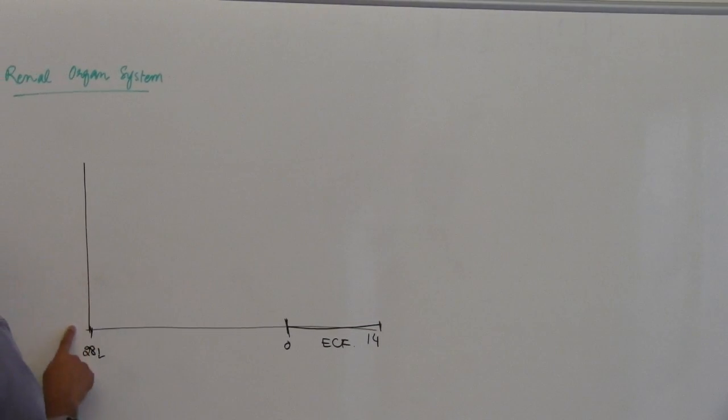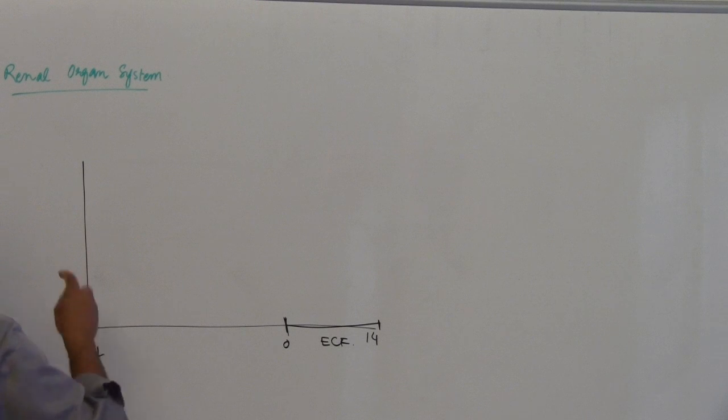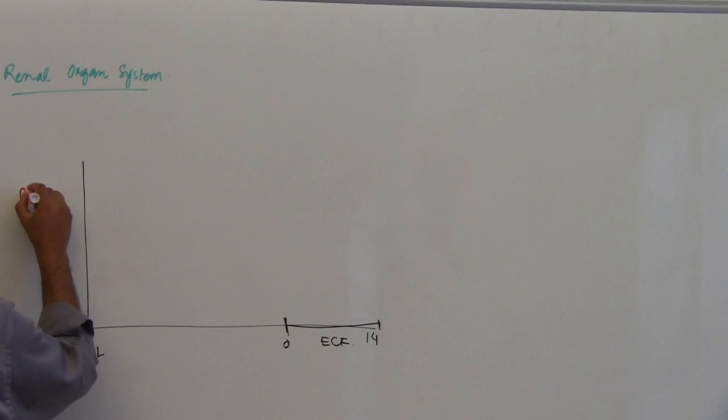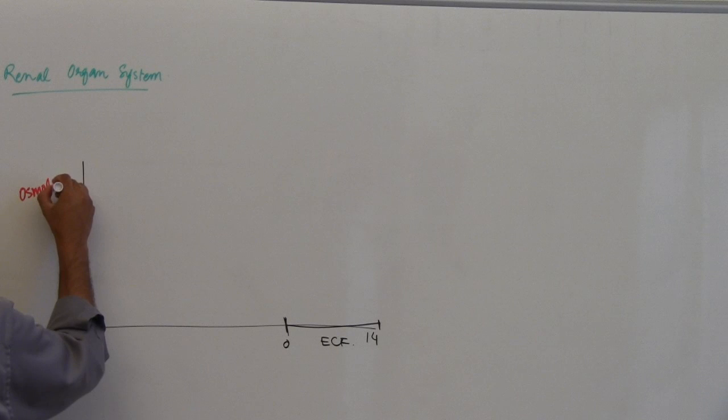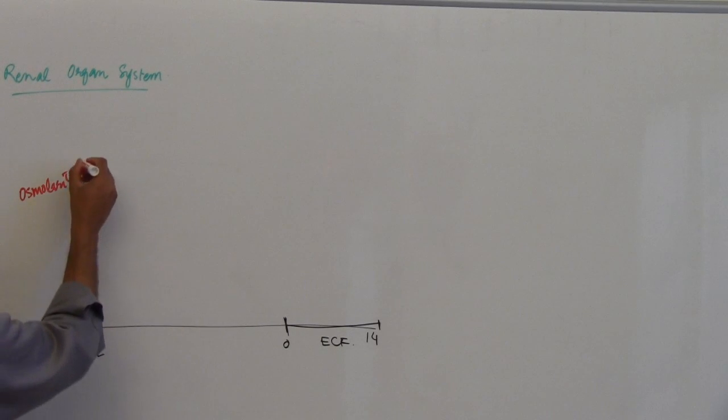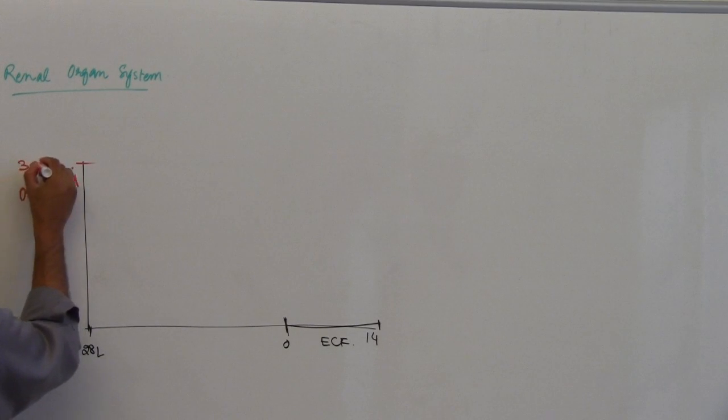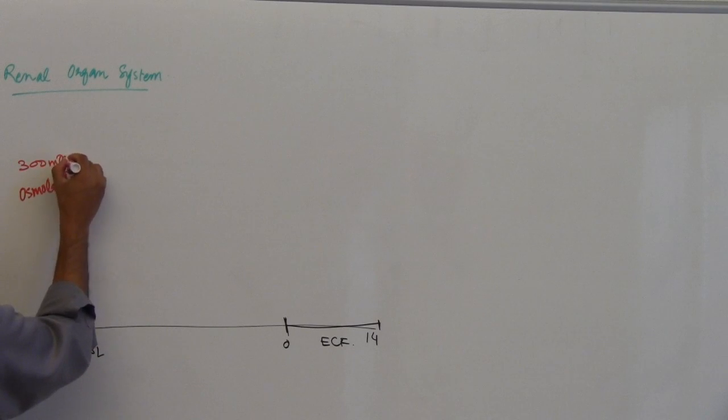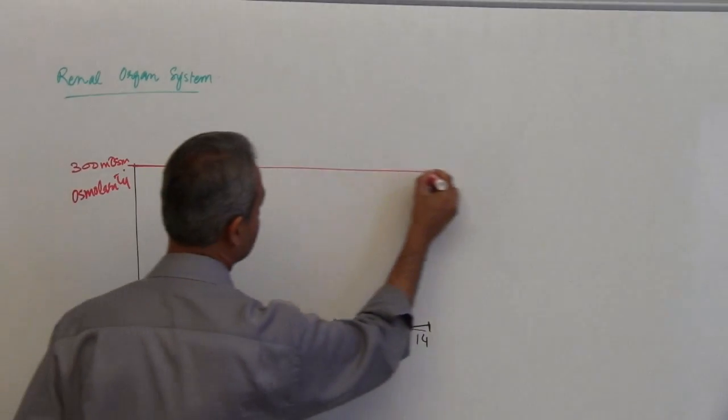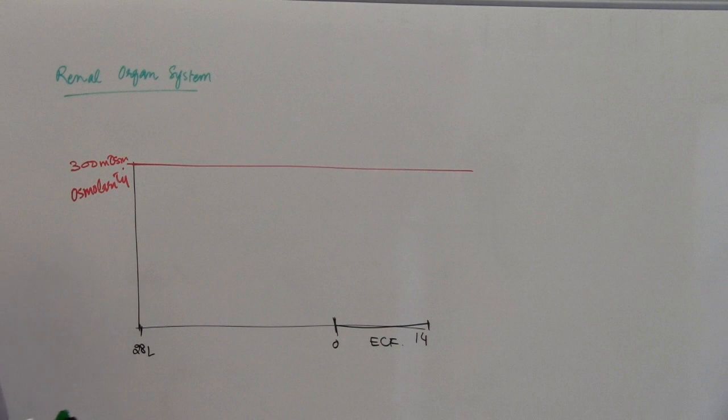This is y-axis which is the osmolarity. So let us say normal osmolarity, I am going to say 300 milliosmoles. So that is 300 milliosmoles osmolarity.